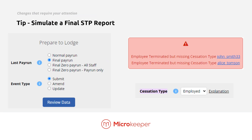Now let's dive into the changes that will require action. A great starting point is to simulate a final STP report. To do this, go to your last pay run, select final and review data — there you will get a list of all the issues that are going to be raised. We've improved the links as well, so clicking on an employee username will take you to the exact field within the employee profile that needs fixing.